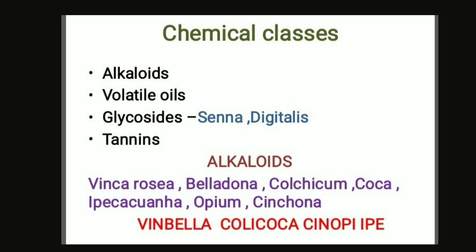We have only two crude drugs under glycosides in the lesson — senna and digitalis. There are seven crude drugs under alkaloids. So remember: two glycosides, seven alkaloids, and there are five volatile oils.